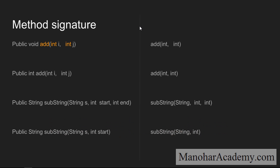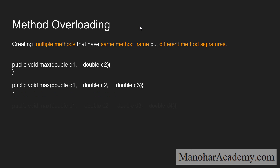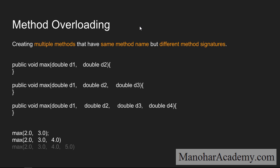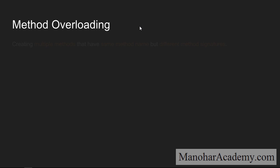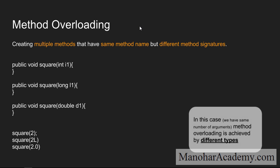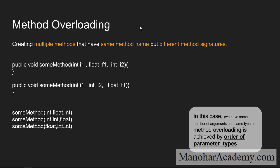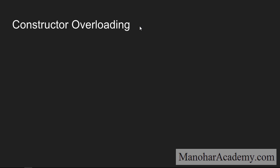In the previous lesson we saw what a method signature is — it is defined by the method name and the argument list, or the type of the arguments. We also saw that method overloading is achieved by having a different number of arguments, different types of arguments, or a different order of arguments. The order of the arguments is also important.